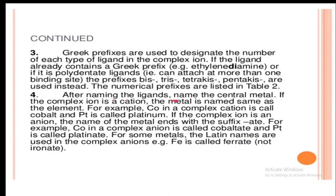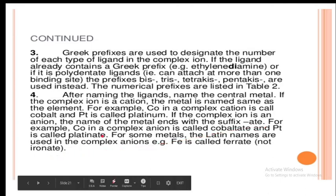After naming the ligands, name the central metal. If the complex ion is a cation, the metal is named the same as the element — for example, cobalt in a complex cation is called cobalt and platinum is called platinum. If the complex ion is an anion, the name of the metal ends with the suffix -ate. For example, cobalt becomes cobaltate and platinum becomes platinate. For some metals, the Latin names are used in complex anions — for example, Fe is called ferrate, not ironate.